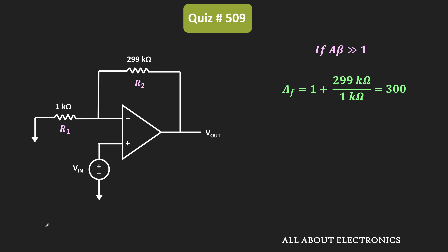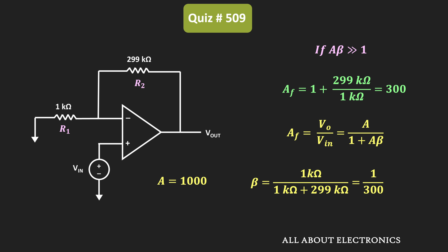But if that is not true, then the closed-loop gain can be given as A divided by 1 plus Aβ, where A is the open-loop gain of the op-amp and β is the feedback factor. We have been given that the open-loop gain is equal to 1000. For this non-inverting configuration, the feedback factor β is equal to R1 divided by R1 plus R2, which is 1 kΩ divided by 1 kΩ plus 299 kΩ, equal to 1/300. Therefore, Aβ equals 1000/300, which is approximately 3.33.